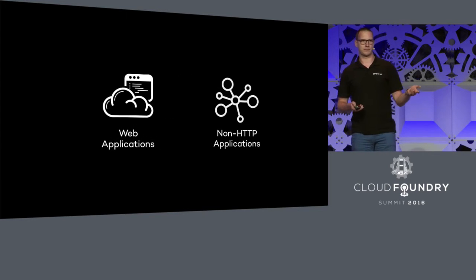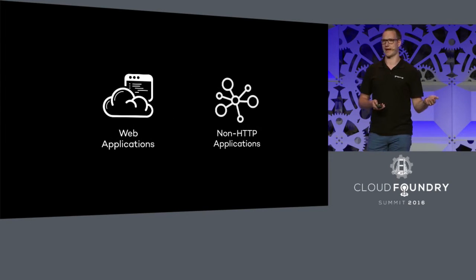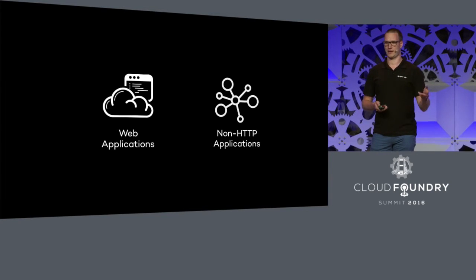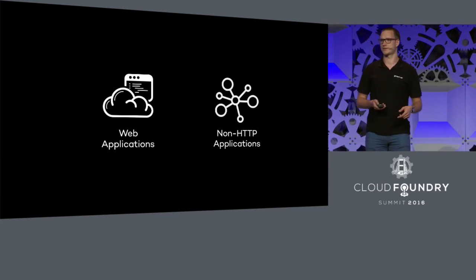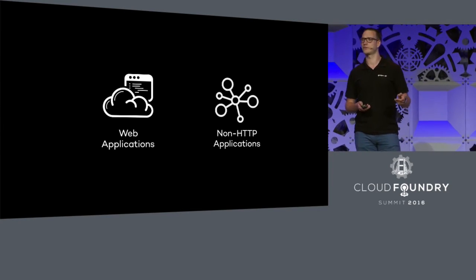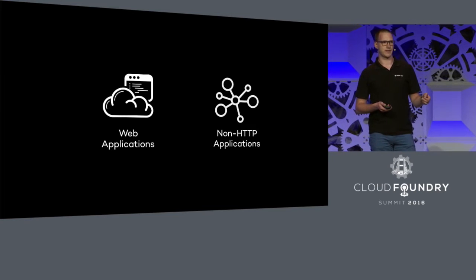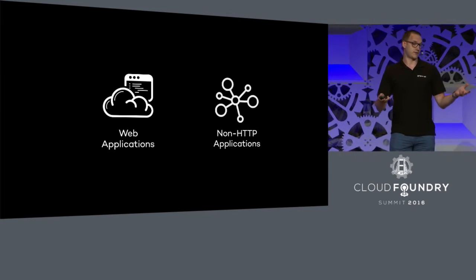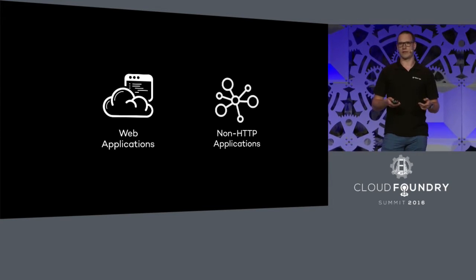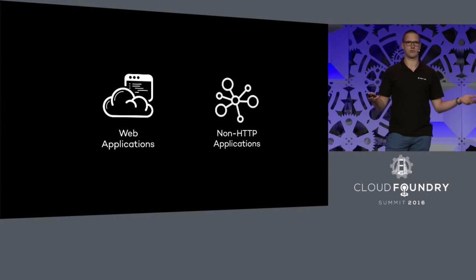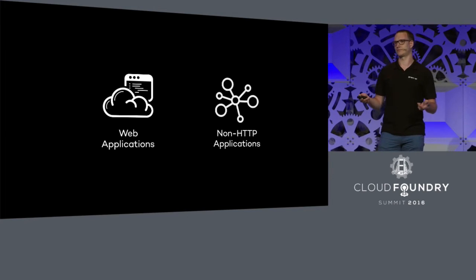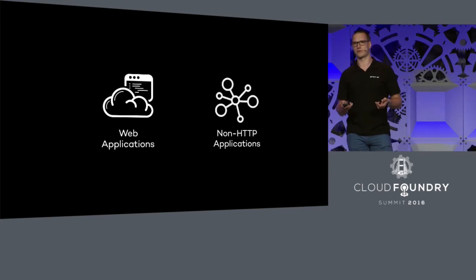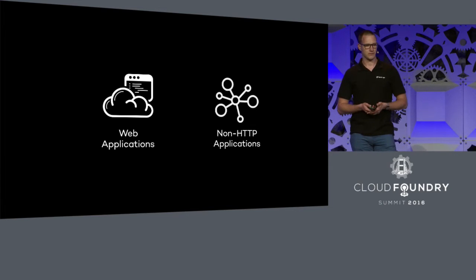So a group of brilliant guys from the TCP routing team added non-HTTP application support in Cloud Foundry — they added TCP routing. This made it capable of handling, for instance, IoT solutions where you have a network of sensors communicating with the platform over TCP sockets and providing their data. So we handle those two types of applications.